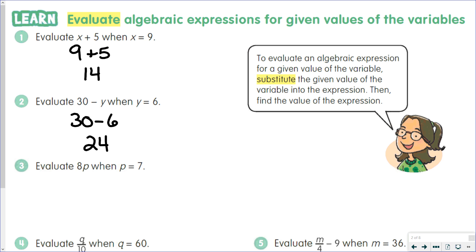Evaluate 8P when P equals 7. Well, 8P means 8 times P, so we're going to take out the P and put in 7. We're going to do 8 times 7, which is 56.